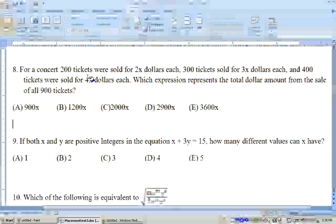Instead of being 2 dollars, it's 2x dollars, so 200 times 2x is 400x. 300 times 3x is 900x, and 400 times 4x is 1,600x. You take 1,600x plus 900x plus 400x, you'll get 2,900x, so the answer is D.